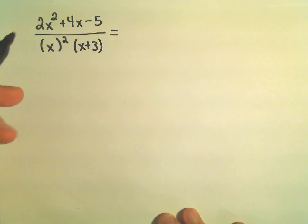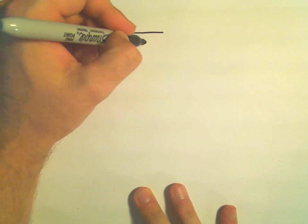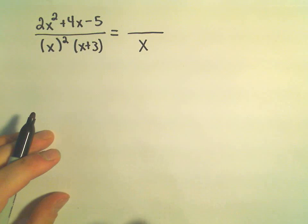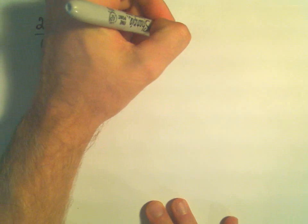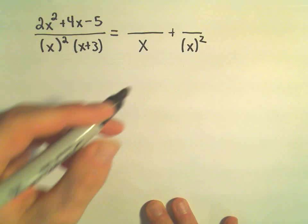So, really we have a linear factor that's repeated. And it says, to do our partial fraction decomposition, one of the fractions involves just x. And the other fraction is then going to involve x squared.